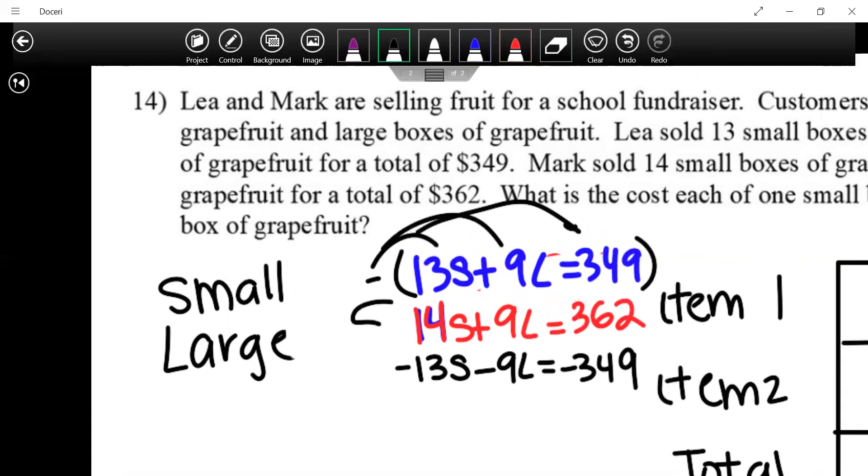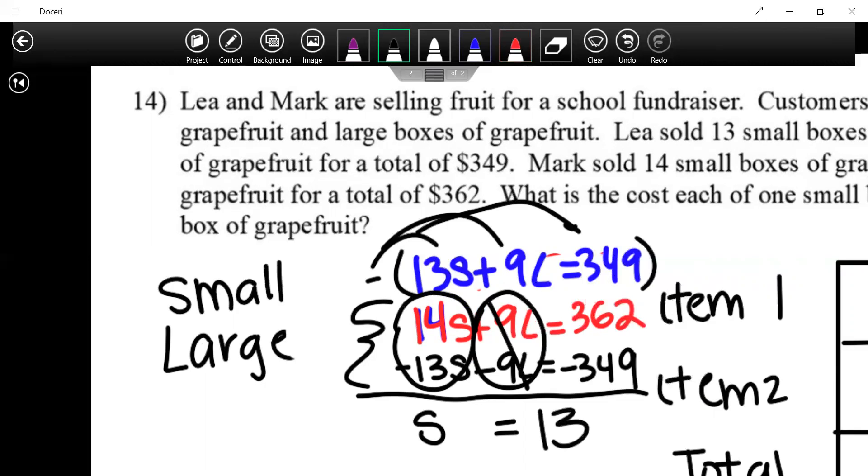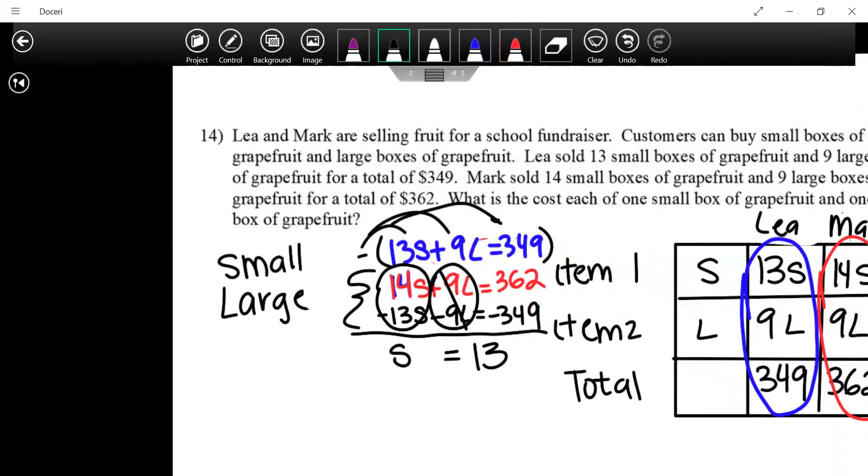So we now have our two equations. Let's use elimination. 14S and 13S is just going to give me S. 9L negative 9L is going to go away. 362 away from 349. What do we got? 13. How much does a small box of grapefruits cost? 13 bucks. Is that a good price? I don't know what the price of grapefruit goes to. The boxes at Costco go for like 7 bucks maybe. I'm not a grapefruit guy.